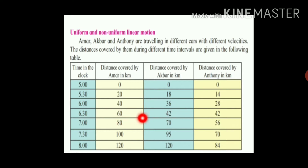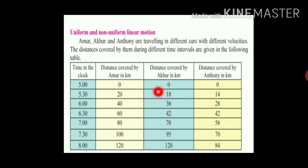In the fourth 30 minutes, Akbar travelled 28 km. In the fifth half hour, he travelled 20 km. And in the last half hour, he travelled 25 km. So in every 30 minutes — the same time interval — Akbar travelled different distances.